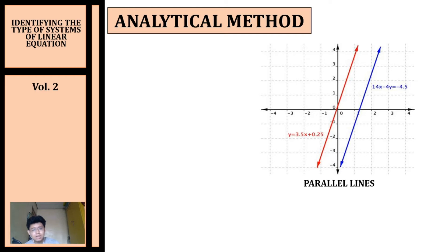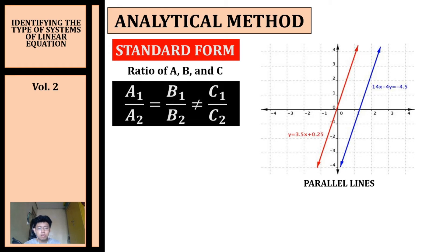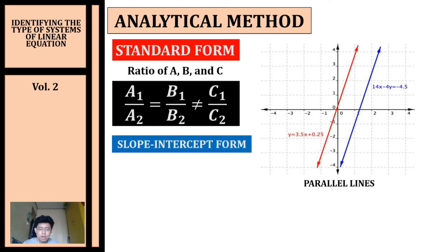Now let's talk about parallel lines. How do we identify if our given system of linear equations will form parallel lines? First, we rewrite our equations to either standard form or slope-intercept form. In standard form, we get the ratio of a, b, and c. The ratio of a must be equal to the ratio of b, but not equal to the ratio of c — if this is the case, we will have parallel lines.